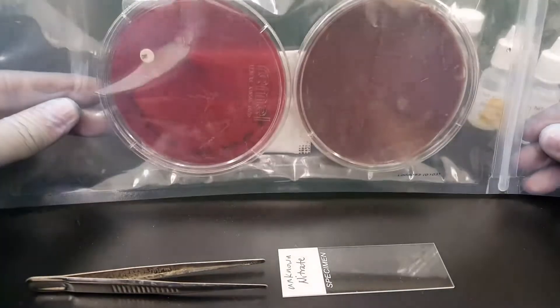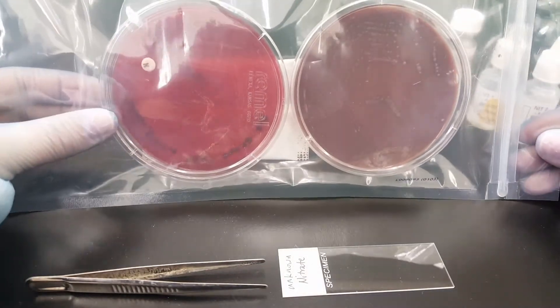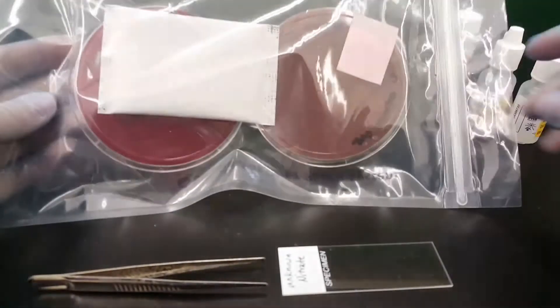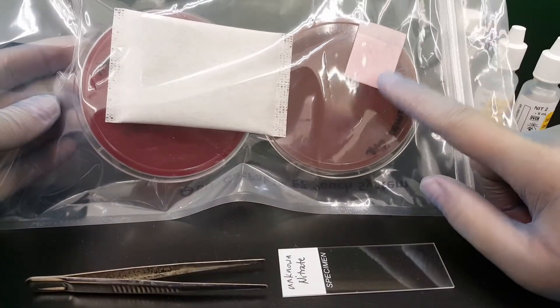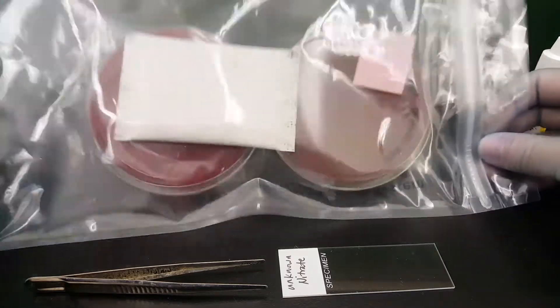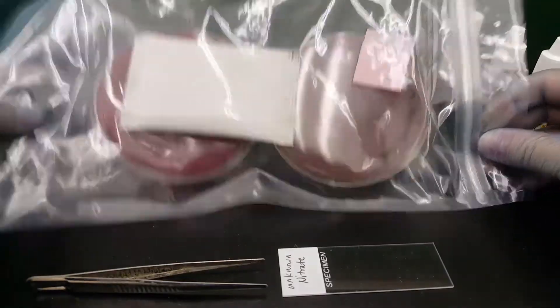So we look at this bag. We have the brucella blood agar plate, we have the chocolate purity plate. The indicator did turn pink so that indicates that there was a good anaerobic environment that was produced by the gas pack here.